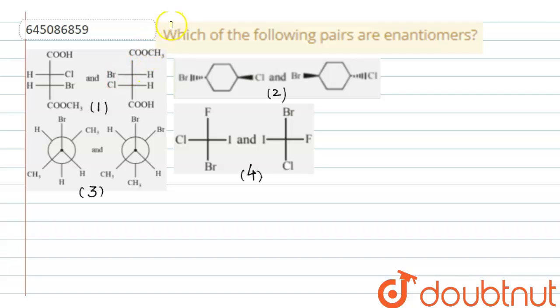Hello friends, the question is: which of the following pairs are enantiomers? Here four pairs of organic compounds are given. We have to find out which pair is an enantiomeric pair.